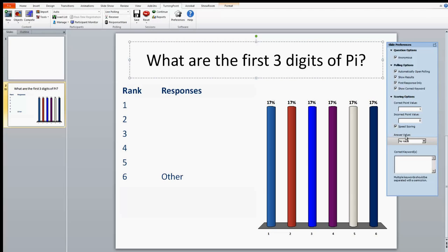Choose Answer Value. Answer values are correct or no value. Moving down the slide preference box, enter the correct keywords in the text box. These keywords are displayed when the slide results are shown. Make sure you separate the keywords with the semicolon.